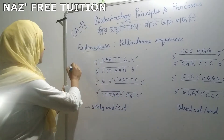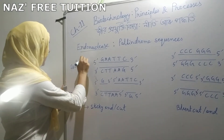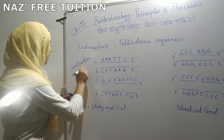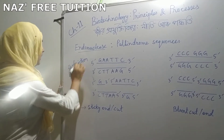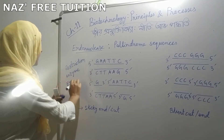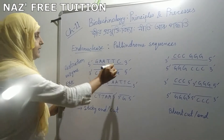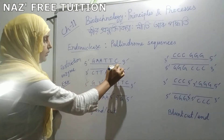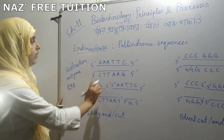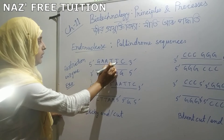This is called a Restriction Enzyme. We have to choose the endonuclease. This is called endonuclease, and this is called exonuclease. The DNA is cut by these enzymes — endonuclease cuts within the DNA strand, while exonuclease acts from the ends.